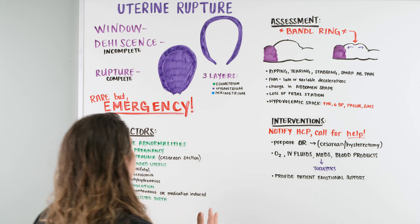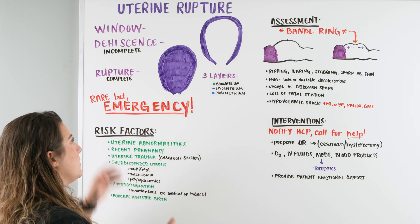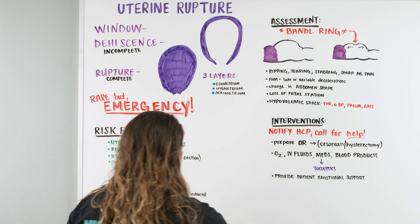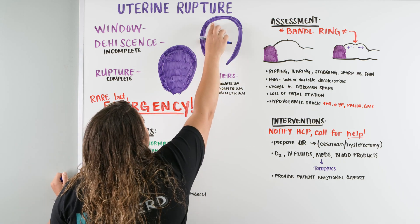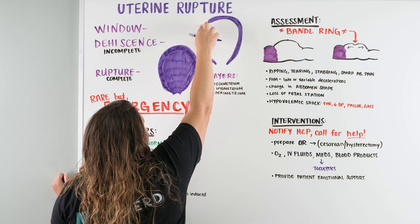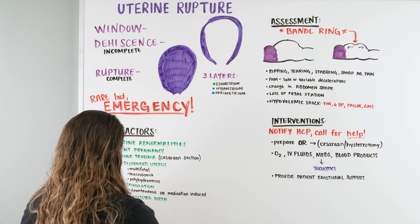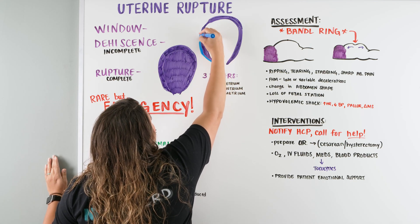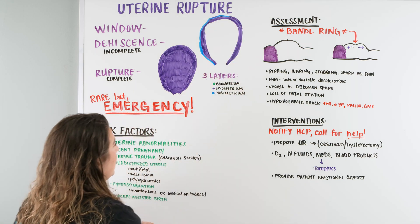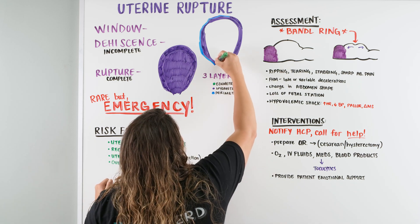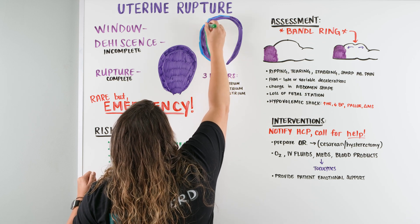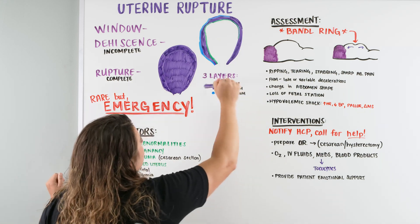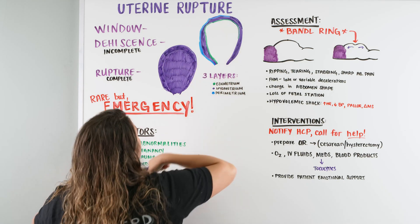Let's get started with uterine rupture. We're going to be looking at three different categories: uterine window, dehiscence, and rupture. First, there is such a thing called a uterine window. With a uterine window, we have three layers of our uterus: our endometrium, our myometrium, and our perimetrium. The uterine window is when there is a slight continuity difference in the myometrium — a thinning area in the middle that allows for a window.